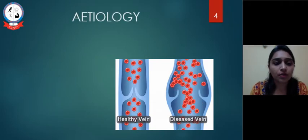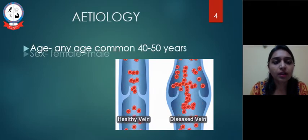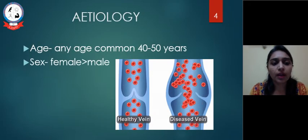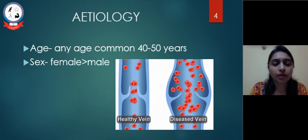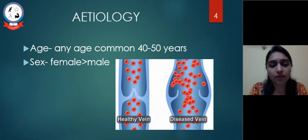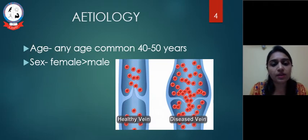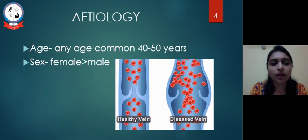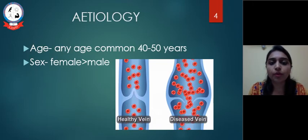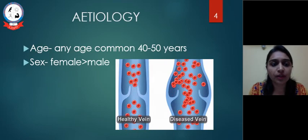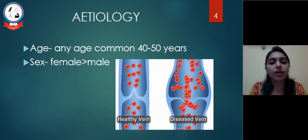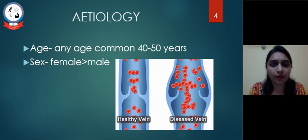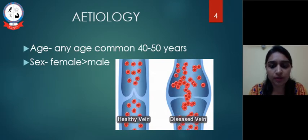Etiology: Varicose veins can occur at any age but are most commonly seen between 40 to 50 years of age. Females are more affected than males.